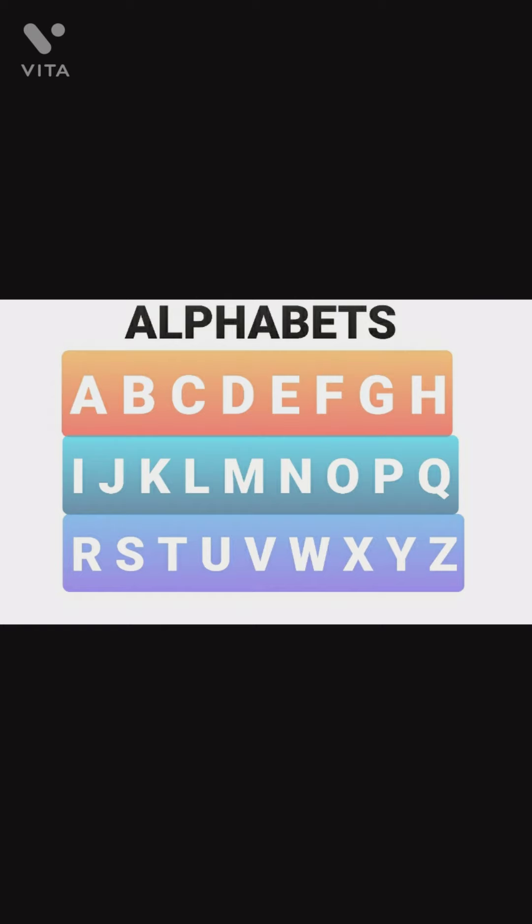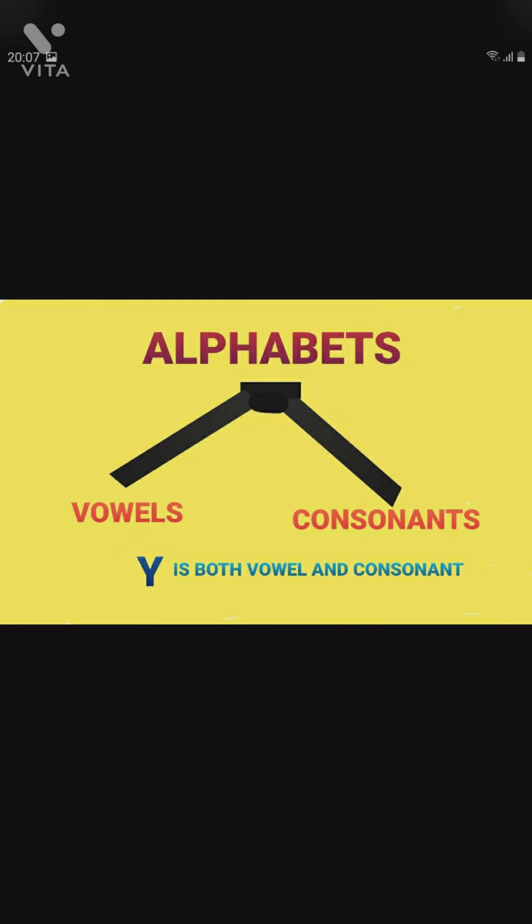Moving forward, alphabets are categorized into vowels and consonants. Note, the alphabet Y is a vowel as well as a consonant. So, we will be discussing about alphabet Y later. But for now, we are going to discuss about the vowels.